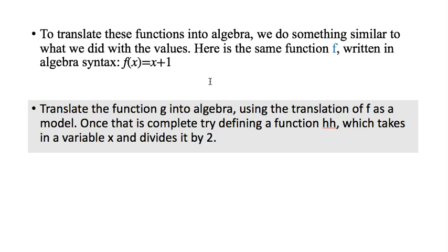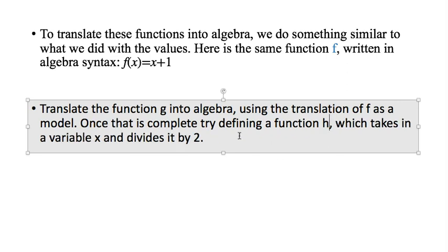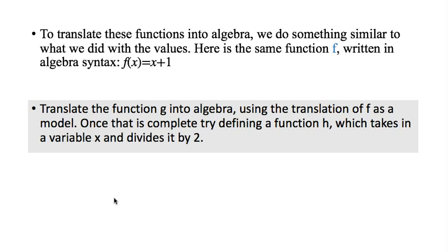So to translate these functions into algebra, we do something similar to what we did with the values. Here's the same function f that was on the previous screen, but in algebra syntax. So the function f takes a variable x and it adds one to it. So now take your function g and translate it into algebra. And then write a new function h that takes in a variable x and divides it by 2. So do that both ways. Do it as a Racket function. A Racket function named h that takes in a variable x and divides it by 2. And then translate that function into an algebra format.